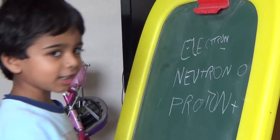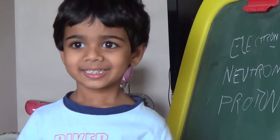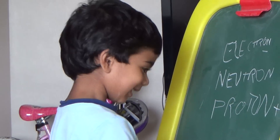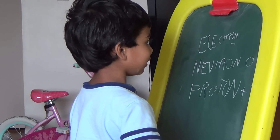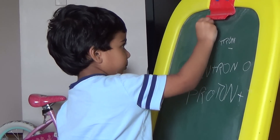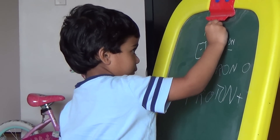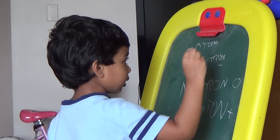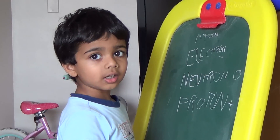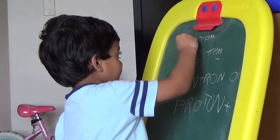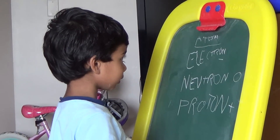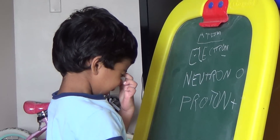Can you say atom? Adam. Adam. Yeah. Can you underline the atom, teacher? Underline — put your line under the atom. Thank you, teacher. Now it looks so nice.